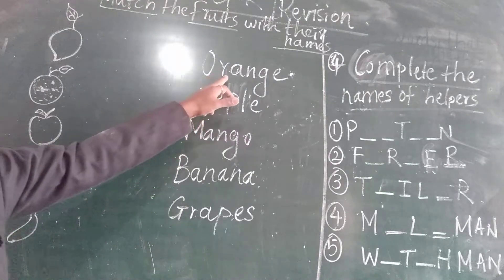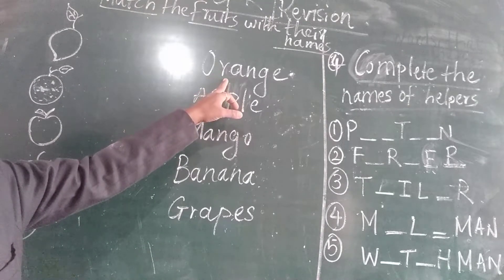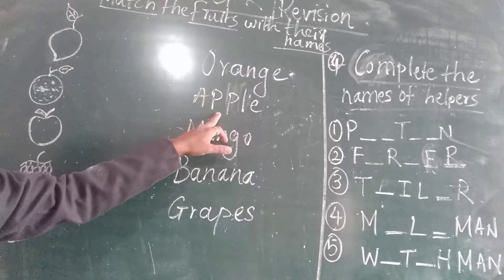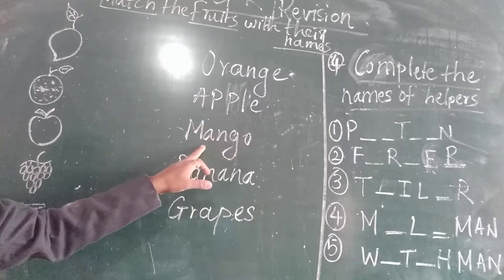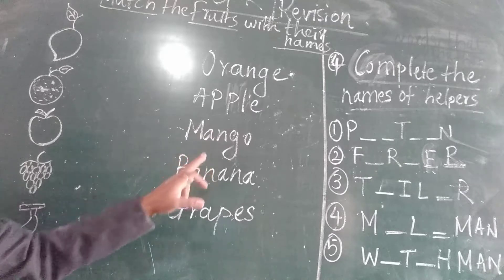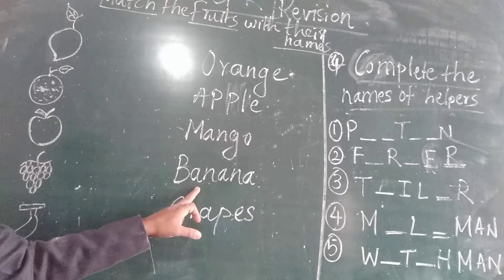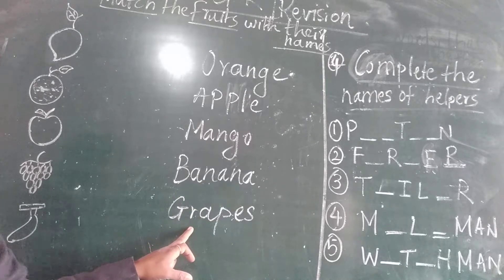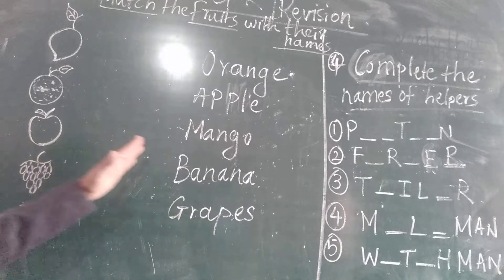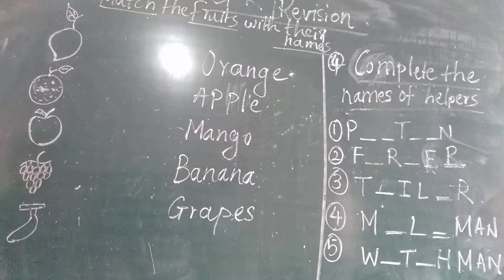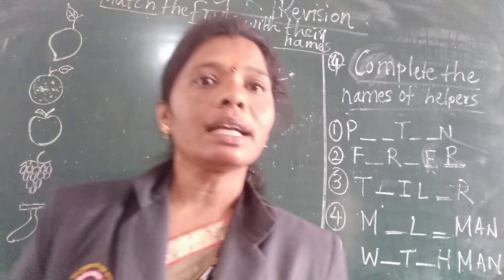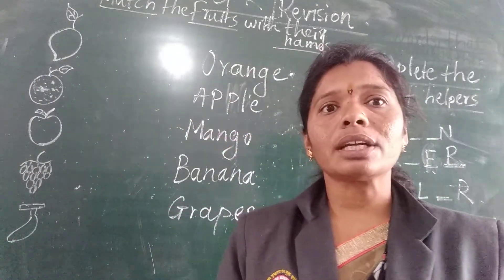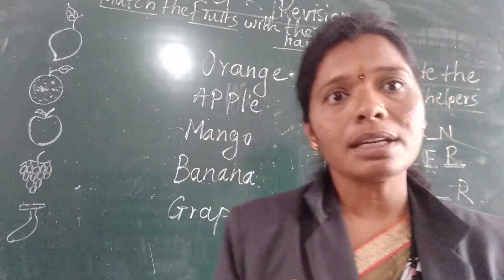You have to say these spellings: O-R-A-N-G-E orange, A-P-P-L-E apple, M-A-N-G-O mango, B-A-N-A-N-A banana, G-R-A-P-E-S grapes. Here the spellings are given, and here pictures are given. You have to match them — make pairs. So you have to learn the spellings.